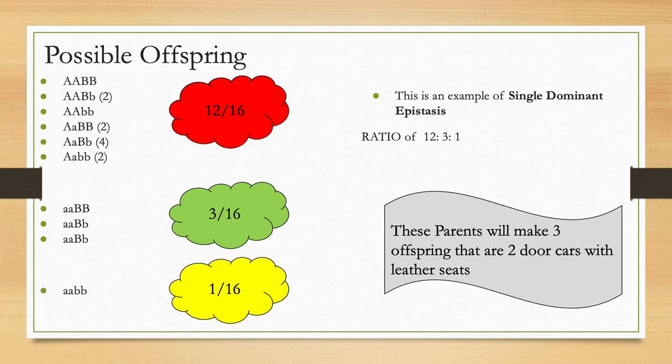There is one car left that is a two-door with cloth seats. This ratio is 12 to 3 to 1.